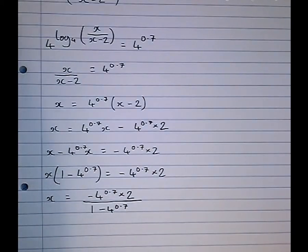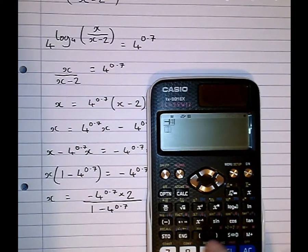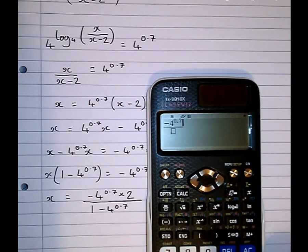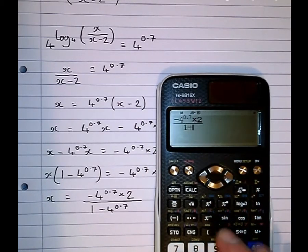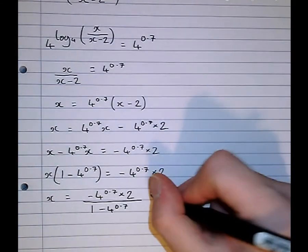Which we type in the calculator: minus 4 to the power of 0.7 times 2 over 1 minus 4 to the power of 0.7, which gives me 3.22 to 3 significant figures.